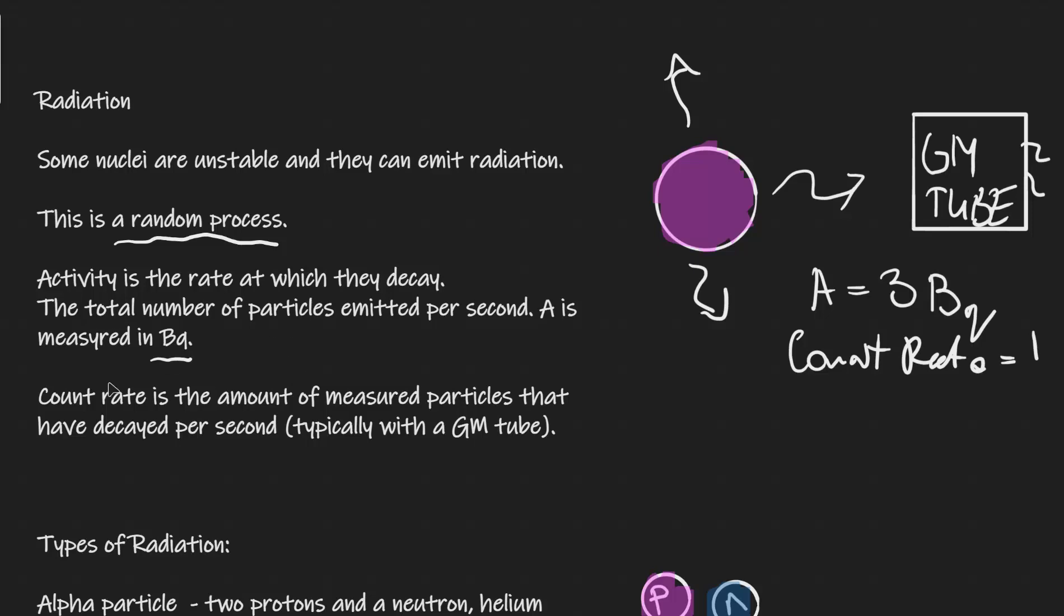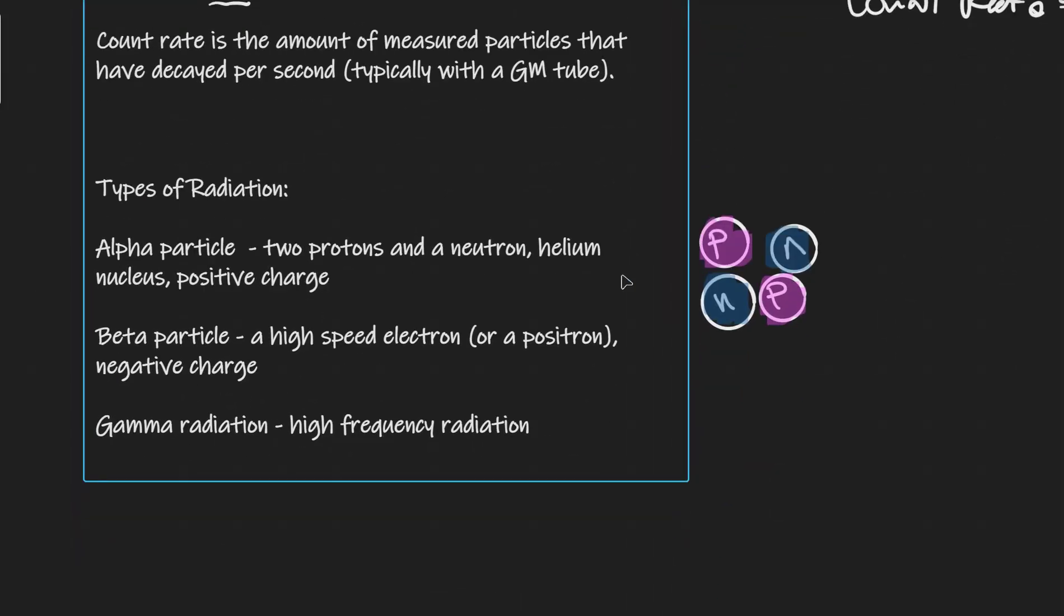Okay, well now what are those particles? Let's consider the three different types of radiation. First of all, we have the alpha particle which is actually the heaviest out of all of them. That consists of two protons and two neutrons. So two protons, two neutrons.